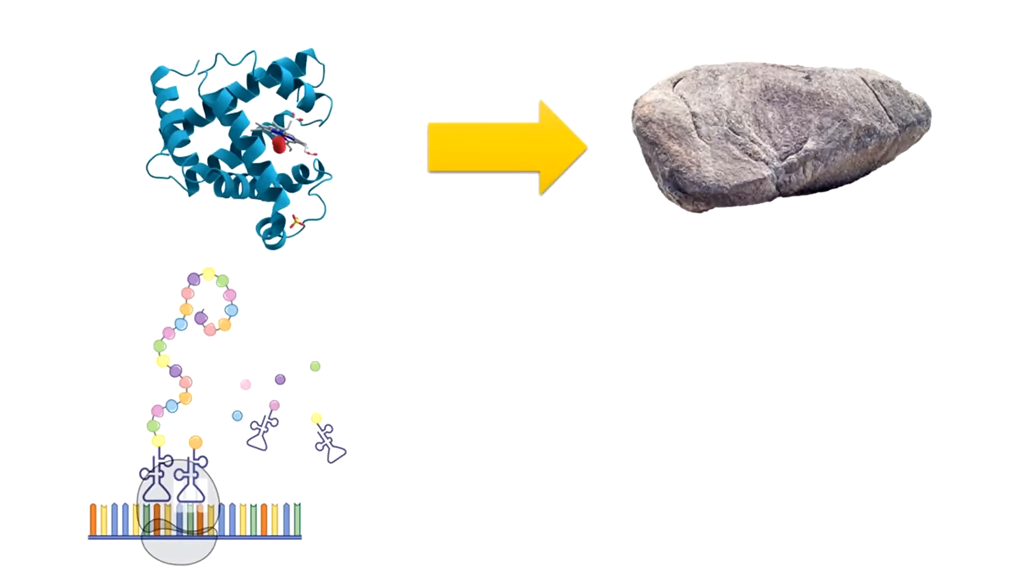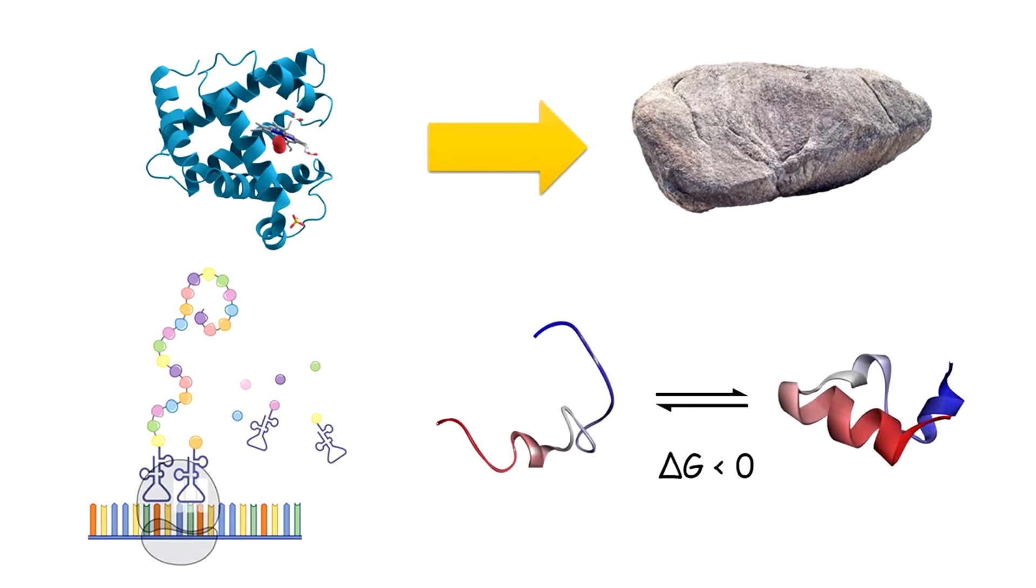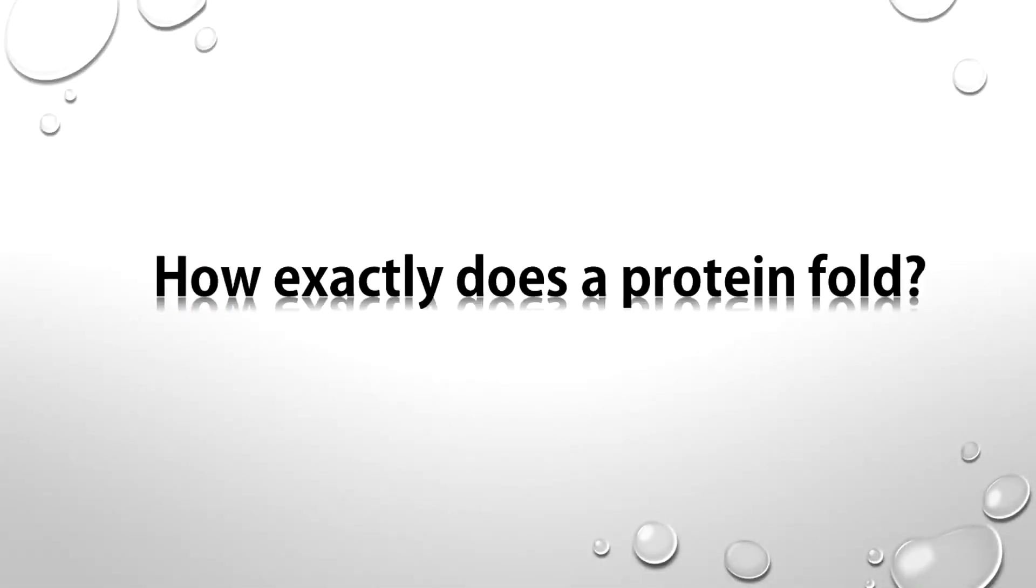But there was a little problem. Proteins are not synthesized in their fully folded form. They are synthesized as unstructured polypeptide chains. So, in order to function, the proteins must fold. But the question is how exactly does a protein fold?